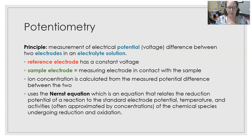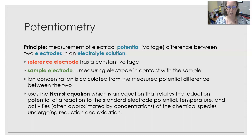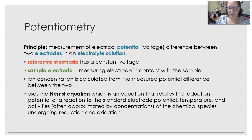It uses the Nernst equation to get the concentration from the voltage reading. The Nernst equation is an equation that relates the reduction potential of a reaction to the standard electrode potential, temperature, and activities that are often approximated by the concentration of the chemical species undergoing reduction and oxidation.